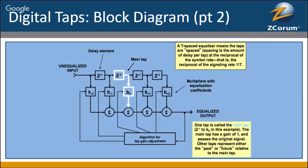The tap denoted at B-zero is called the main tap, and the ones to the right are called the post-main taps. To give an idea of the delay between each tap: for example, running 16 QAM modulation at a symbol rate of 2,560 kilo-symbols per second, the spacing or time delay between one sample and the next is the inverse of that symbol rate — an extremely small number, like 0.39 microseconds. The key concept is that the time between the first sample and the next sample is measurable.